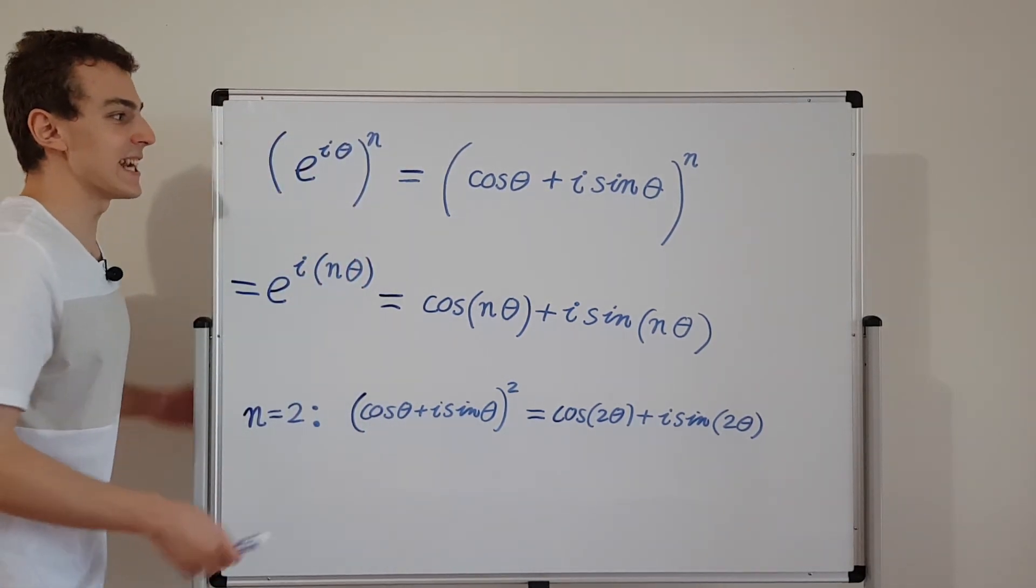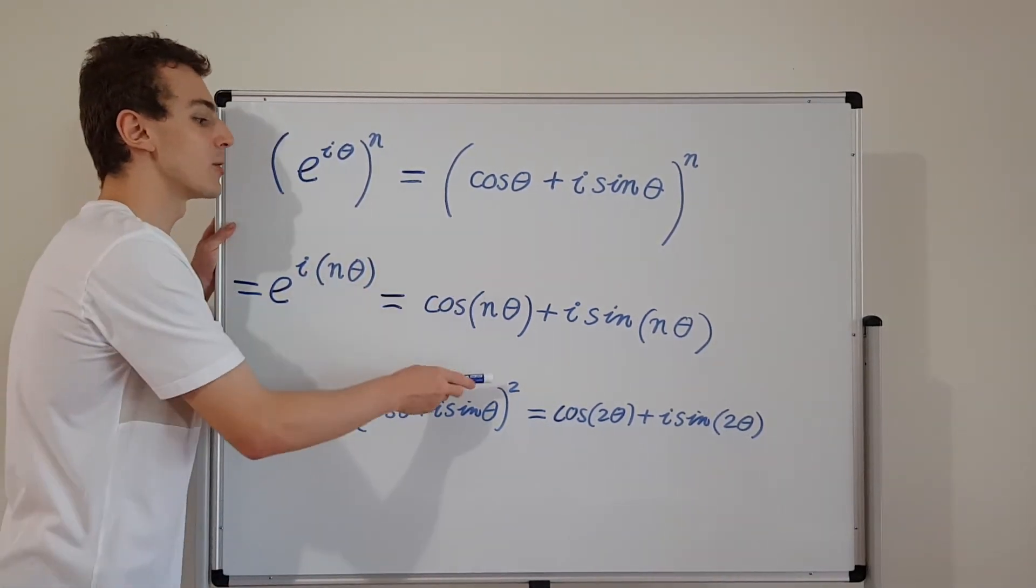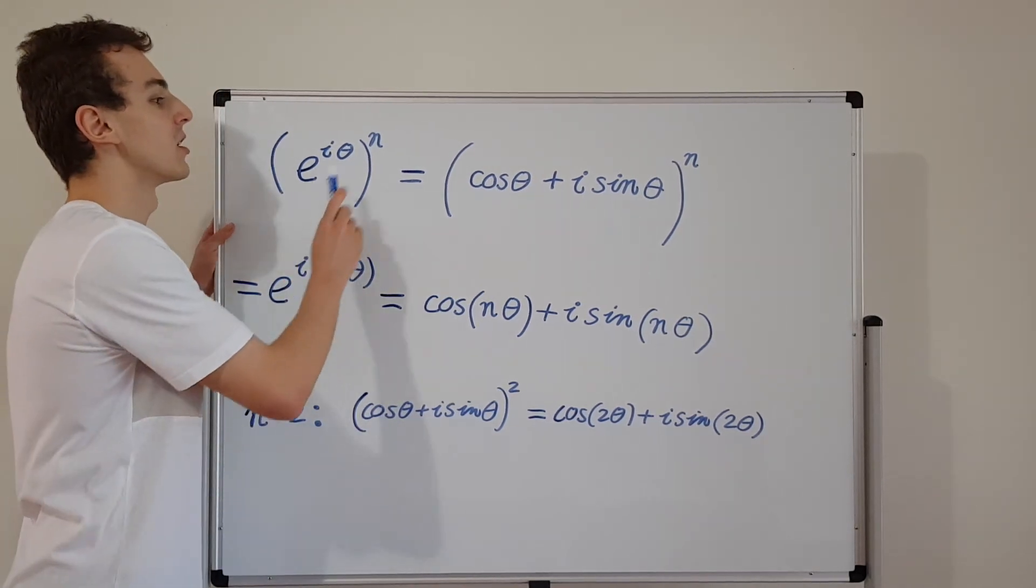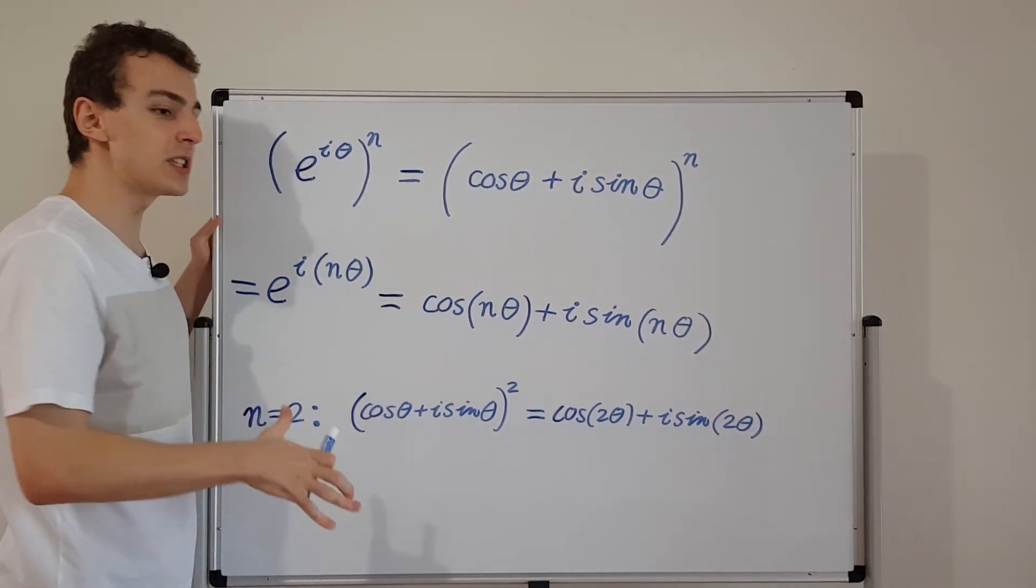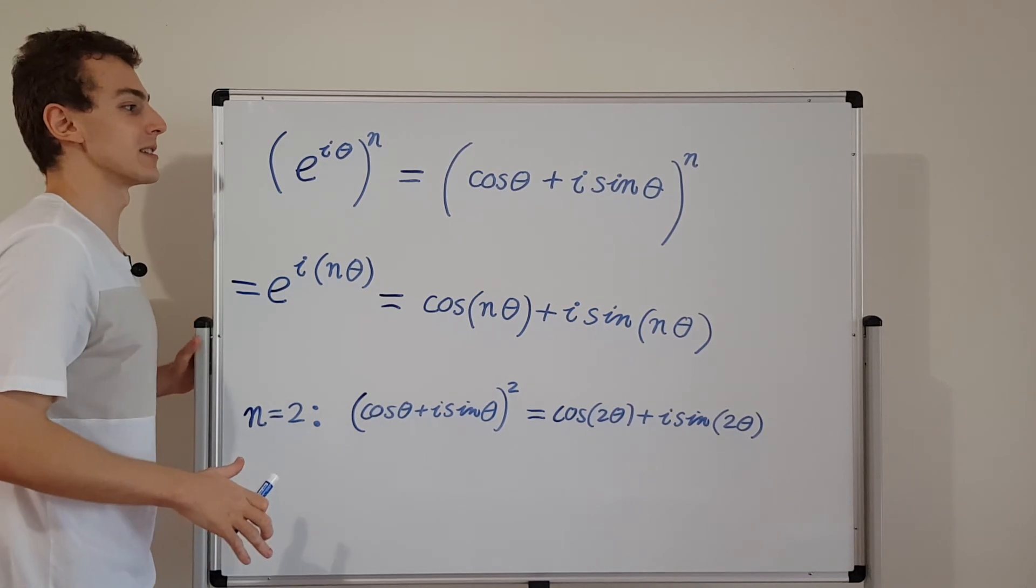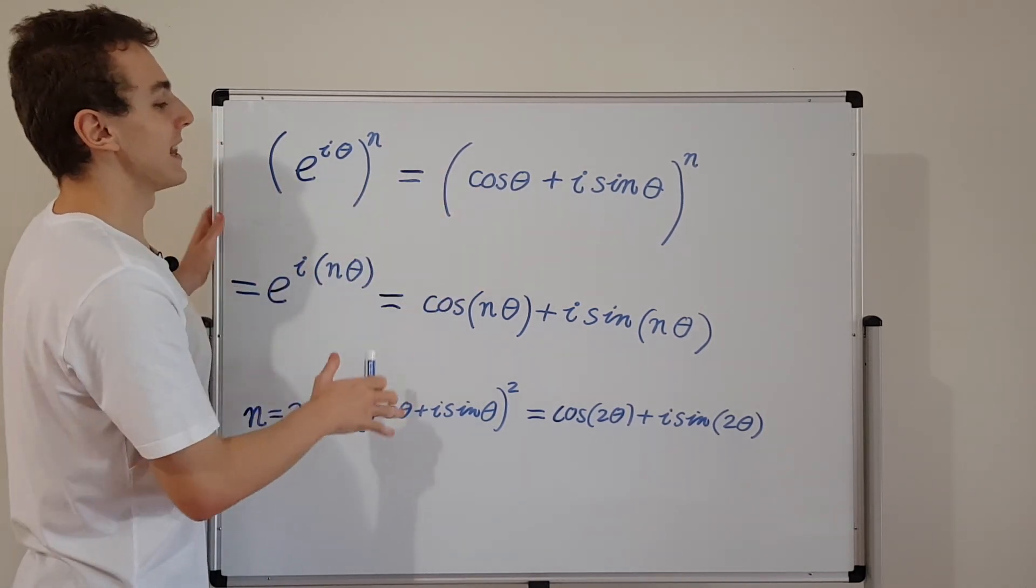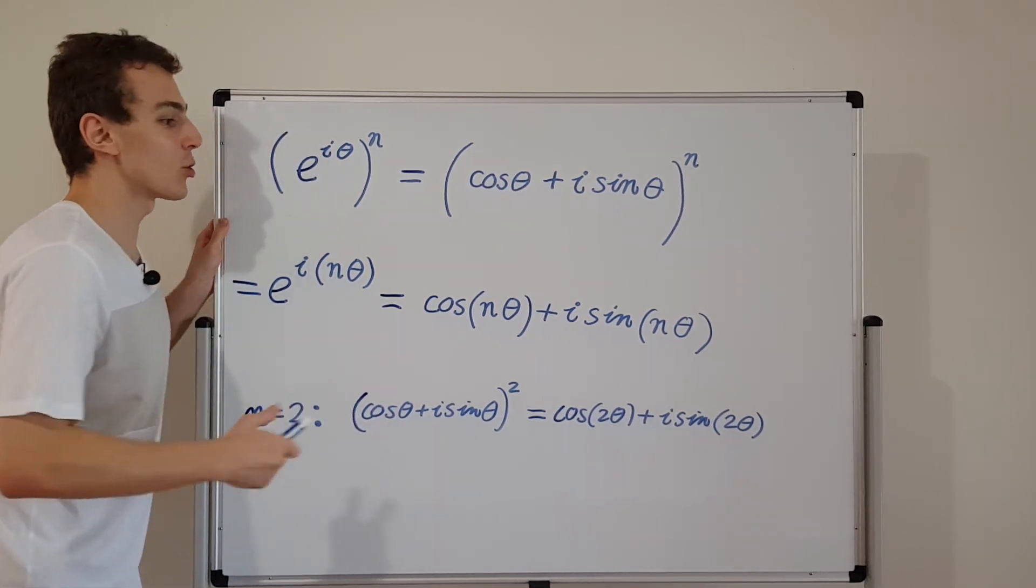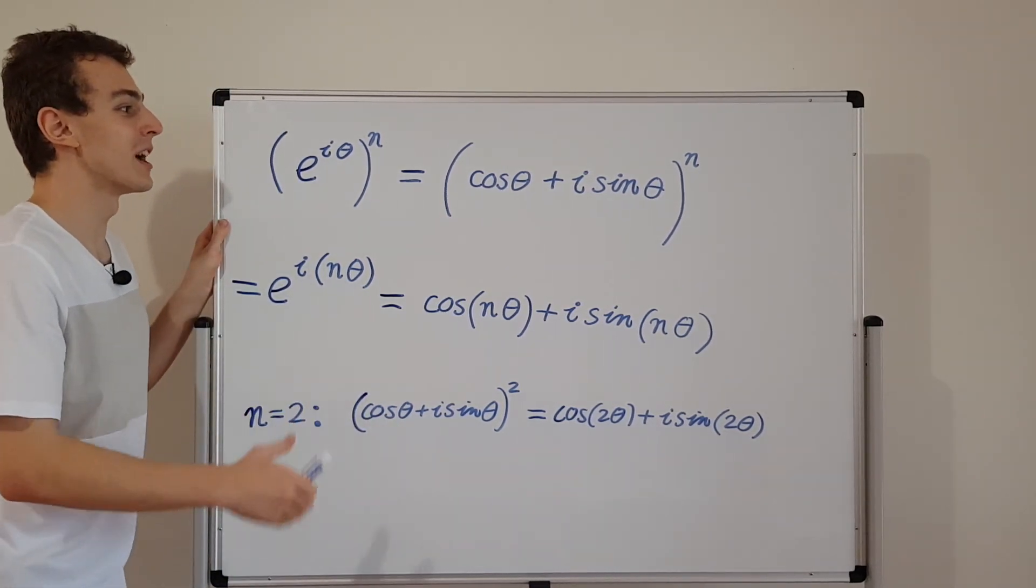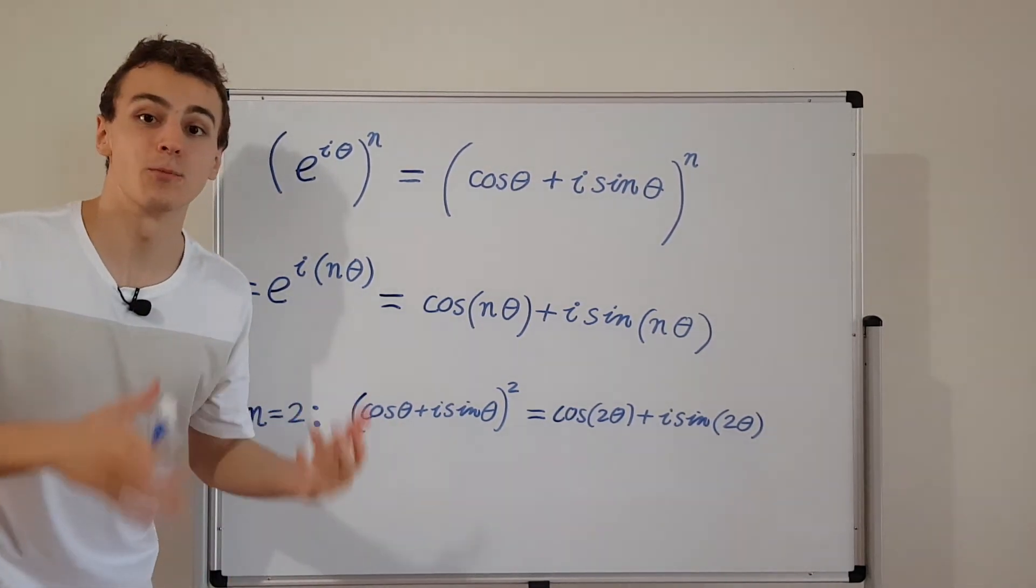So what we've done in this video is investigated de Moivre's theorem using Euler's formula. These are closely linked mathematical properties. De Moivre's theorem and Euler's formula work together very well. And you can actually see the historical development of complex numbers if you look into the history of de Moivre's theorem.